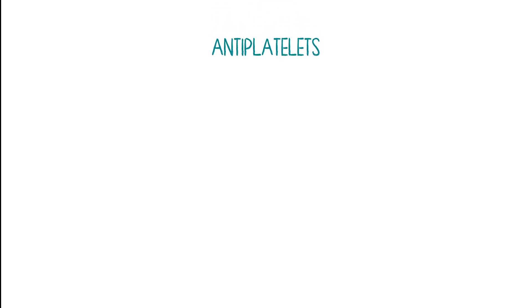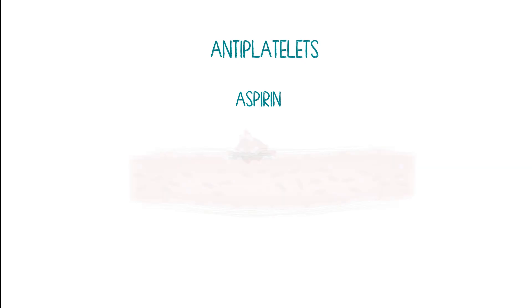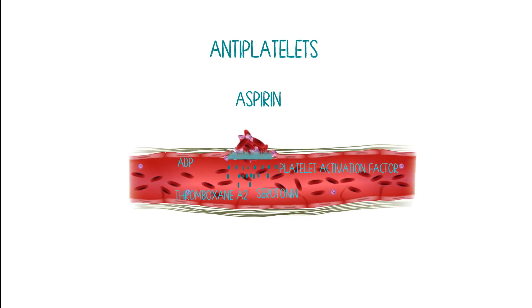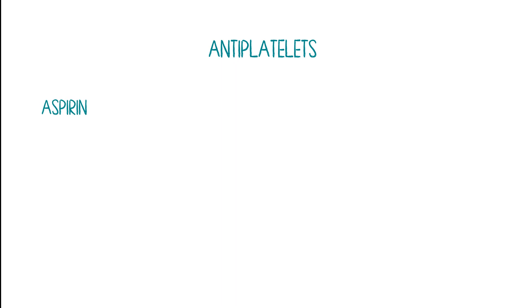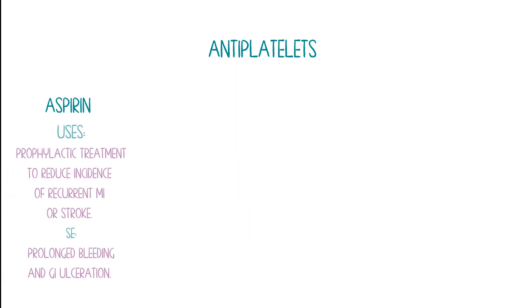Now let's talk about our treatment agents. The first phase of clot formation is platelet aggregation, which is where antiplatelets come in. First, we have aspirin. Remember thromboxane A2, one of the chemical mediators that causes platelet aggregation — aspirin is an irreversible COX-1 enzyme inhibitor that inhibits the formation of prostaglandin H2, which would otherwise convert to thromboxane A2. Aspirin is used as prophylactic treatment to reduce recurrent MI or stroke. Side effects include prolonged bleeding and GI ulceration.